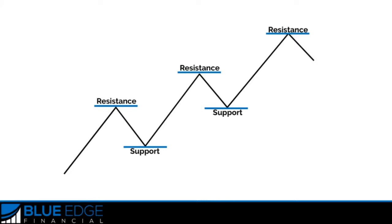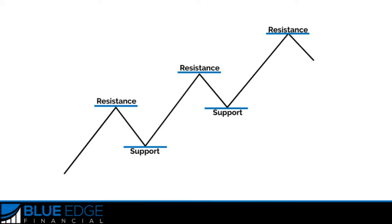Remember, when the market moves up and then pulls back, the highest point reached before it pulls back is now resistance. As the market continues up again, the lowest point reached before it climbs back up is now support. And remember, this is the same whether it's trending up or trending down.